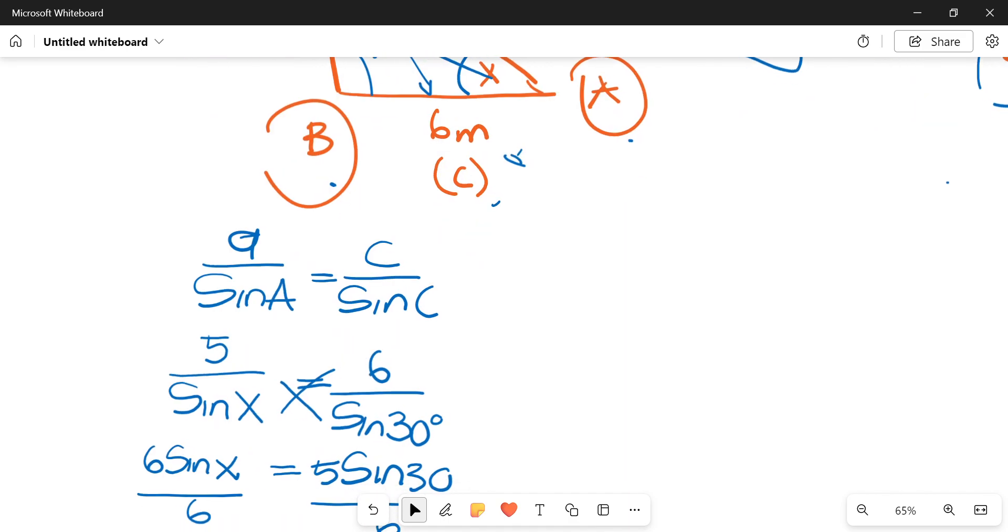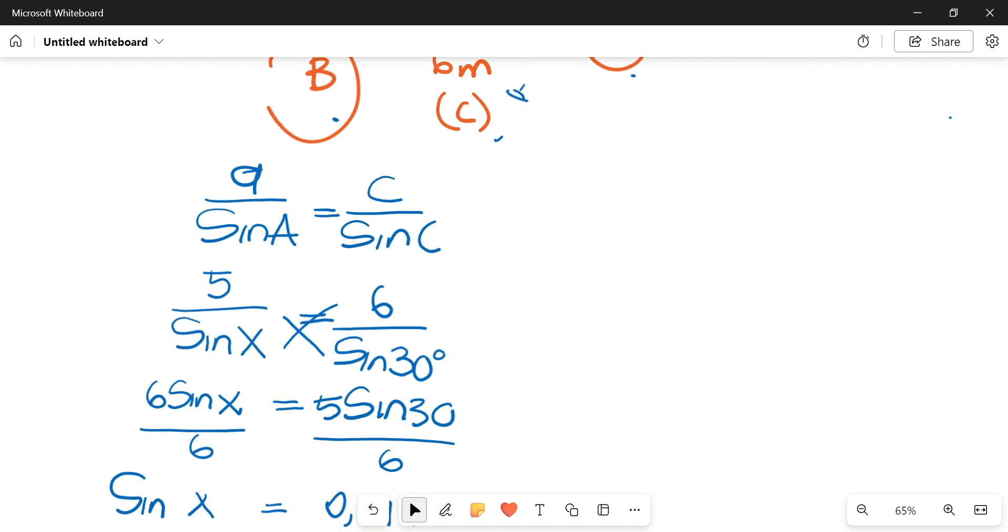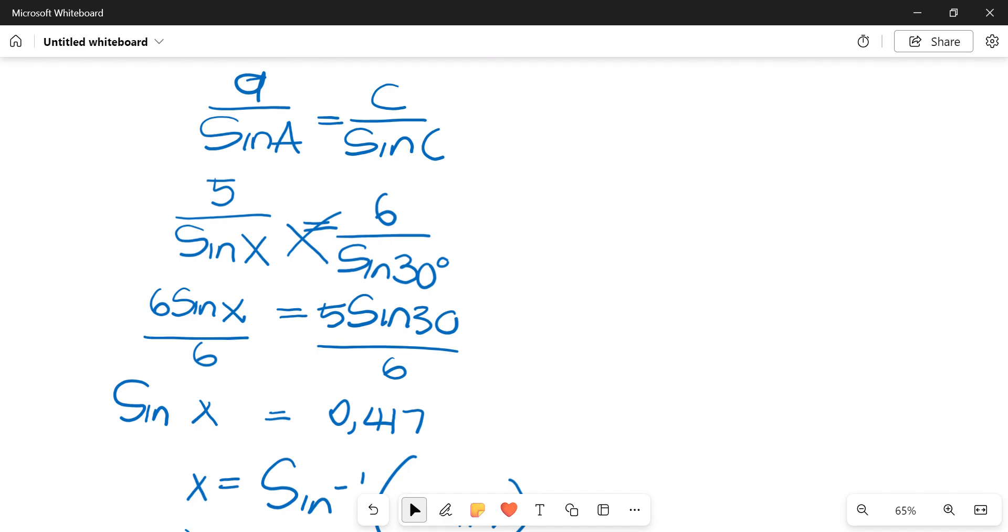Then we're going to plug and play our formula. The length of A was 5, the angle at corner A was X. So we'll say 5 over sine X. Then the length of C was 6, and the angle, corresponding angle at the corner was 30. So we substituted as sine 30. Then we cross-multiplied. Then it led us to 6 sine X over, or 6 sine X. Then on the other side, it gave us a 5 sine 30.